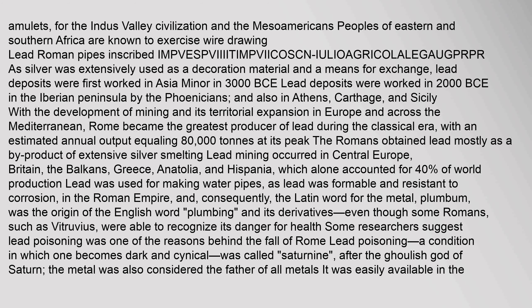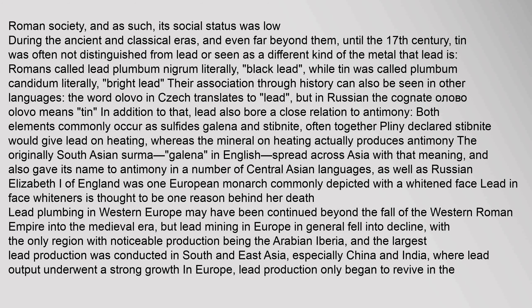Rome became the greatest producer of lead during the classical era, with an estimated annual output equaling 80,000 tons at its peak. The Romans obtained lead mostly as a byproduct of extensive silver smelting. Lead was used for making water pipes, as lead was formable and resistant to corrosion. The Latin word for the metal, plumbum, was the origin of the English word 'plumbing'. Some Romans such as Vitruvius were able to recognize its danger for health; some researchers suggest lead poisoning was one of the reasons behind the fall of Rome. Lead poisoning was called 'saturnine' after the god Saturn.